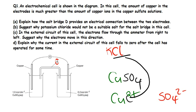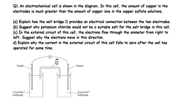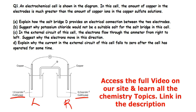Part C: In the external circuit of this cell, the electrons flow through the ammeter from right to left. Suggest why the electrons move in this direction. For this kind of cell, we're dealing with the same solution - copper sulfate solution on both sides - so it's a matter of concentration.